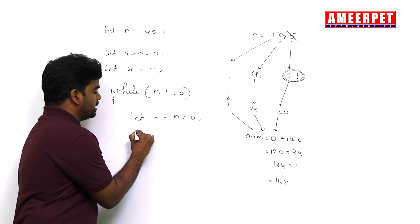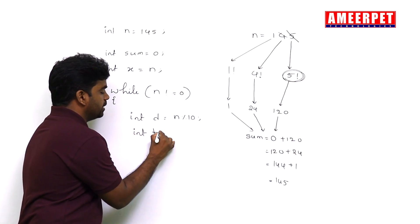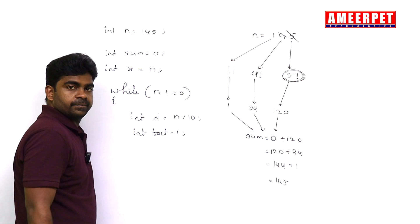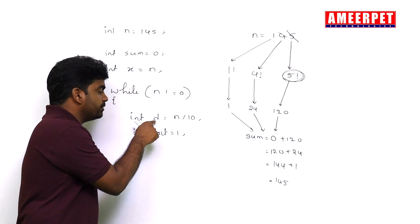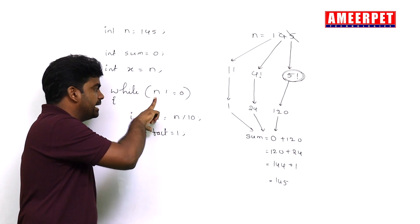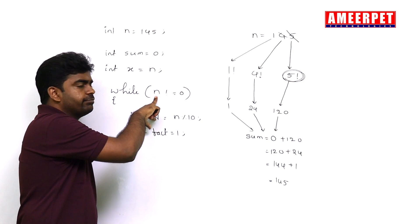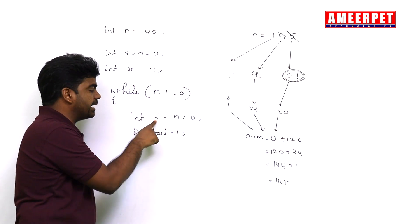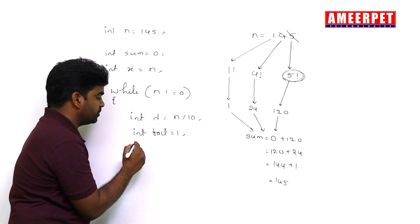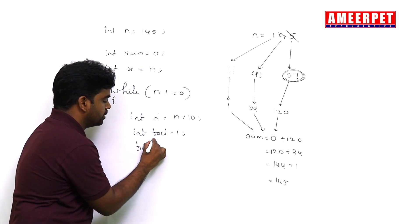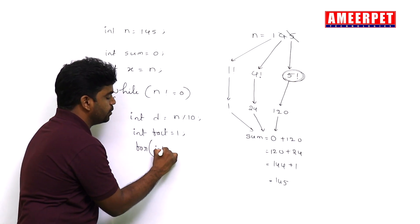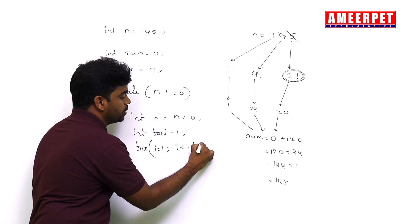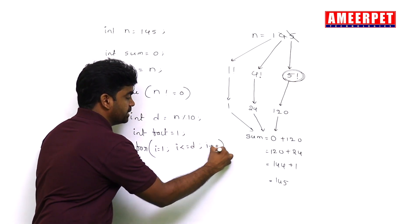A very important one: take one variable fact equals to one. Now find the factorial for this digit, not n. Don't find the factorial for n, find the factorial for this digit. Repeat the loop: for i equals to one, i less than or equals to d, i plus plus.